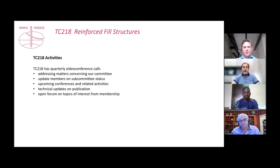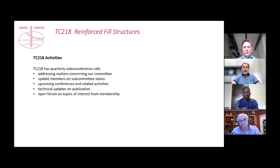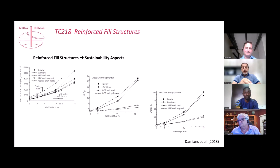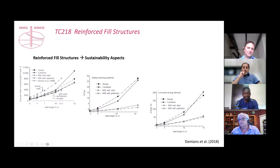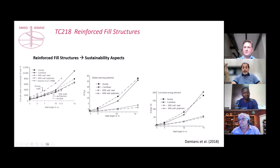From the graph, the classical civil engineering concrete cantilever wall is the line with circles. You can tell that when the height starts becoming higher than five meters, you should really consider the reinforced fill structure or MSE wall using geosynthetics, because it's cheaper.